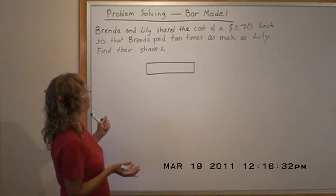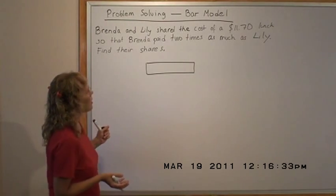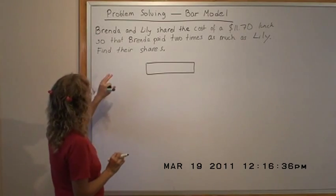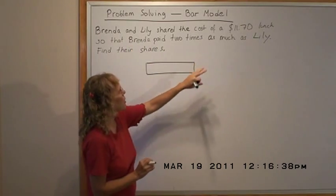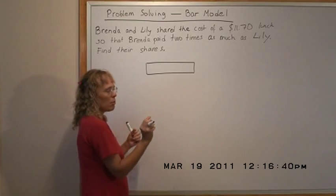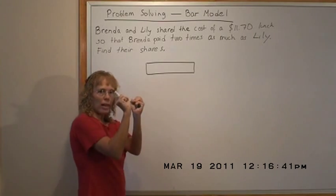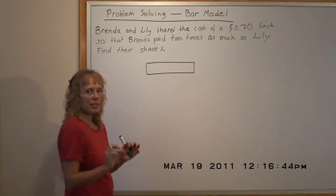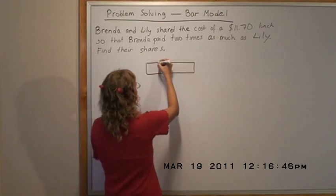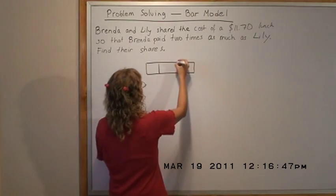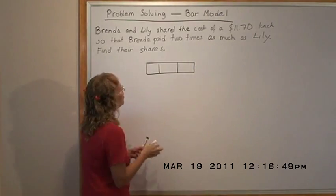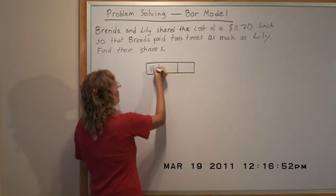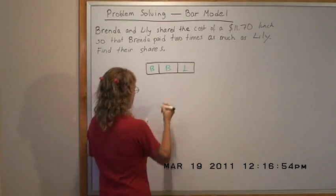It doesn't have any fraction we can see directly, like two-fifths or one-third, but since Brenda paid two times as much as Lily, you have to think of Brenda having two parts and Lily one part. That means there are three parts total. We divide this into three total parts — Brenda has two parts and Lily has one part.